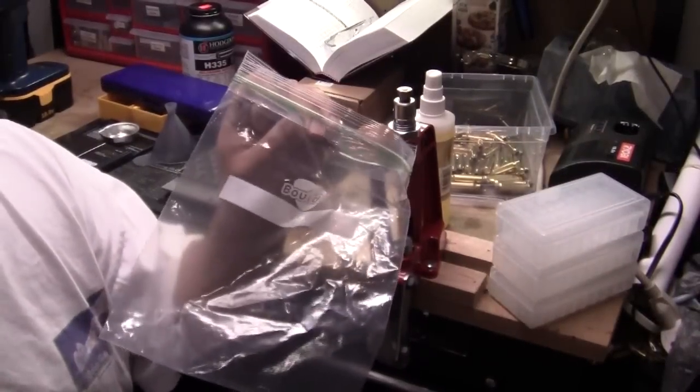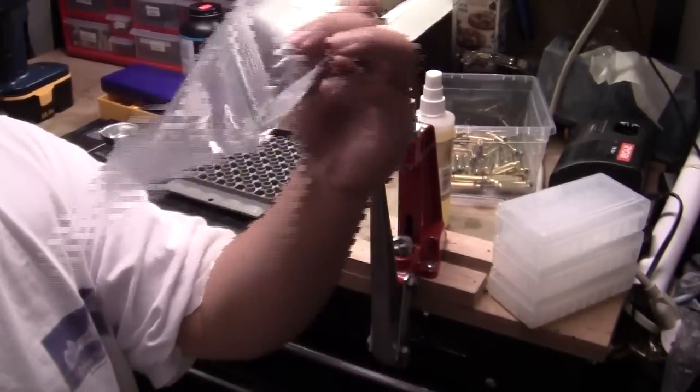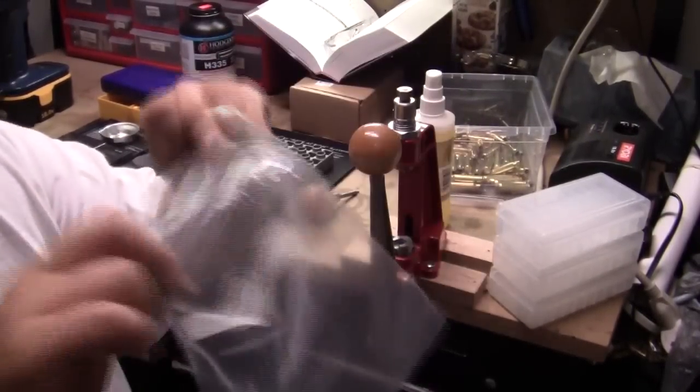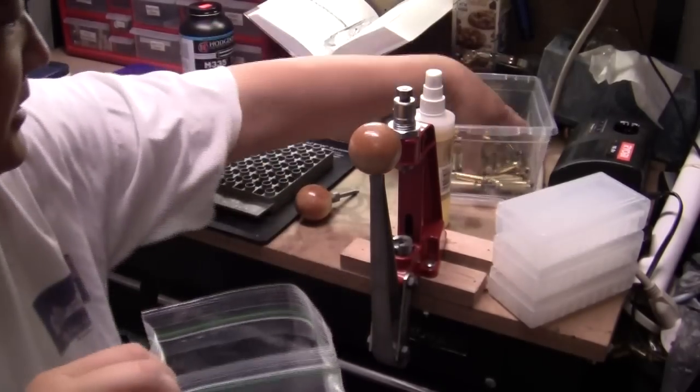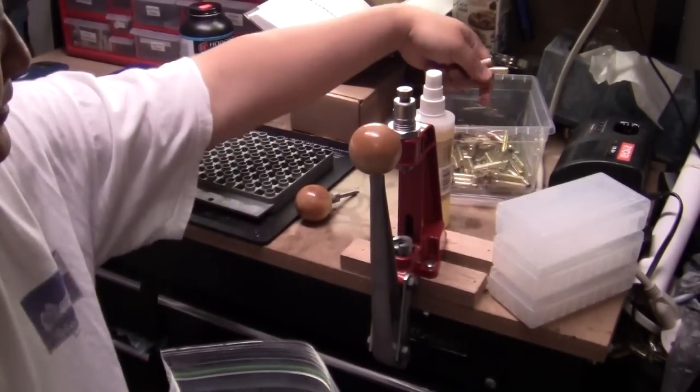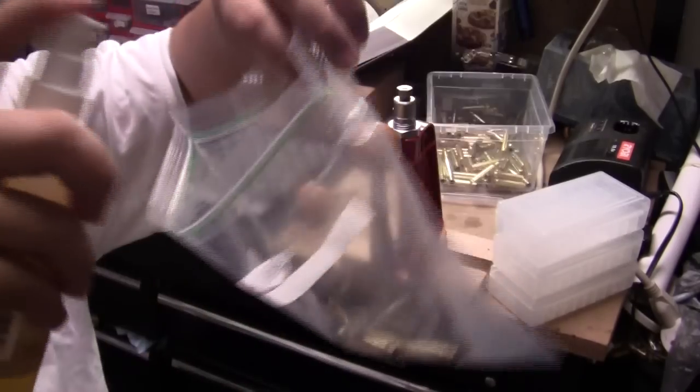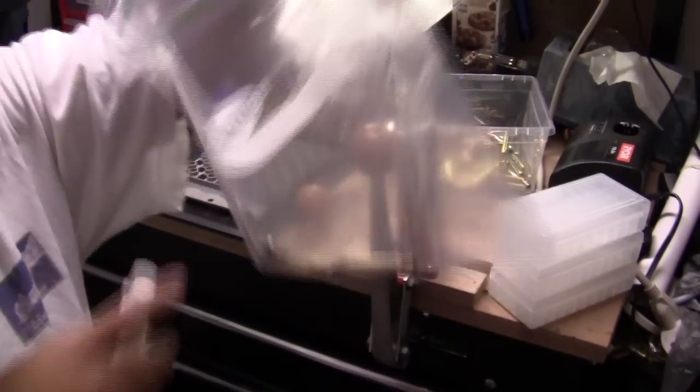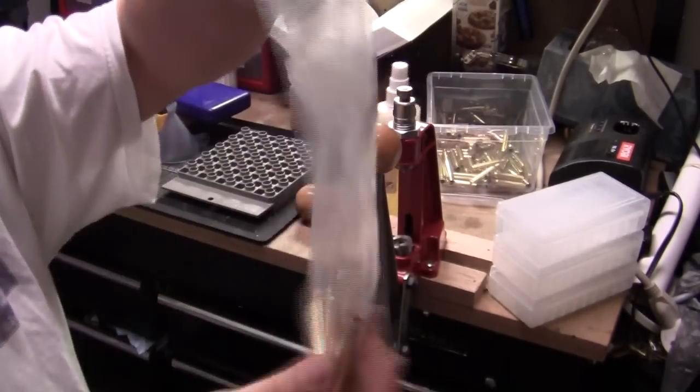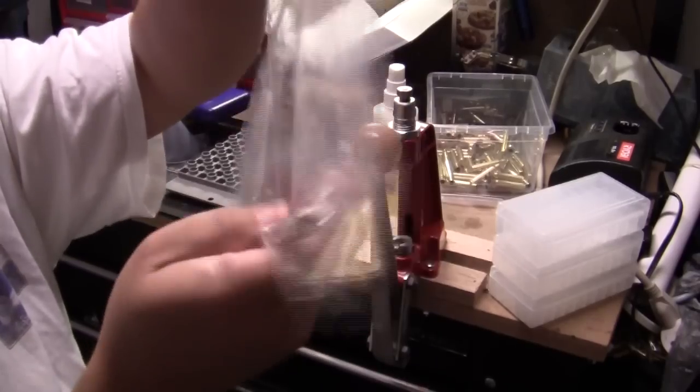Other than the lube, the only other tool you need is a Ziploc plastic bag. What you do, I'll probably do about five pieces of brass at a time or so. Just stick them in the bag, take the case lube, put a few squirts in there.